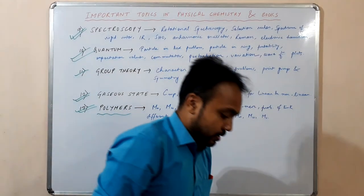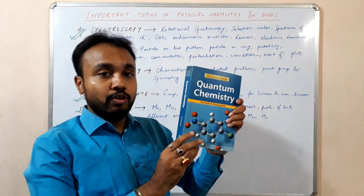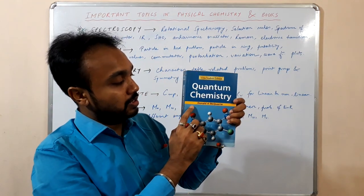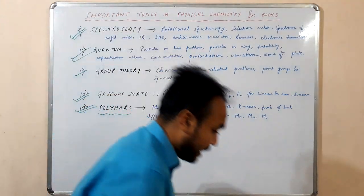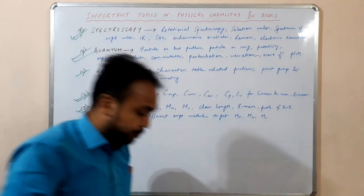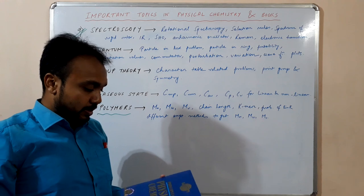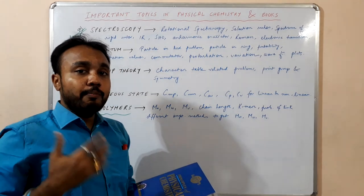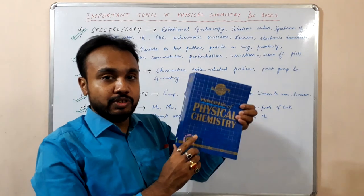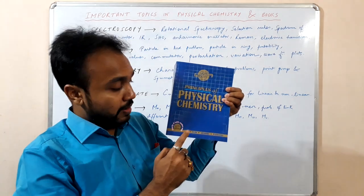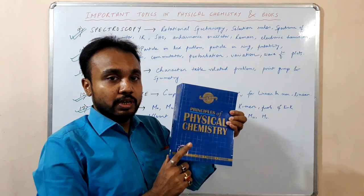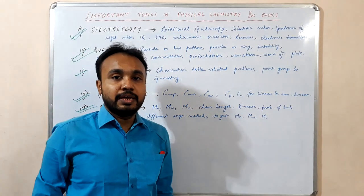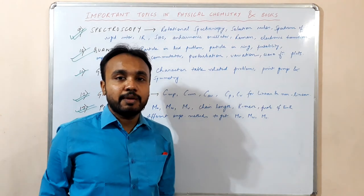For quantum chemistry, you can follow Quantum Chemistry by Donald McQuarrie — it is a very important and popular book. Another book I will suggest is Principles of Physical Chemistry by Puri, Sharma, and Pathania — an Indian author book. This book is very good and has a competitive approach covering all concepts of physical chemistry. You can refer to this book also. If you like my video, please like, share, and subscribe to our channel. Thank you.